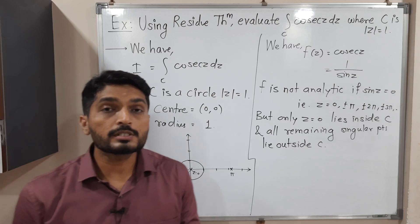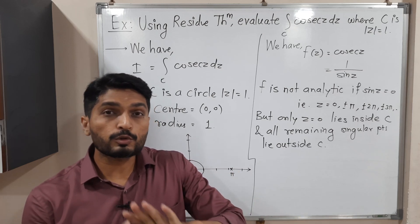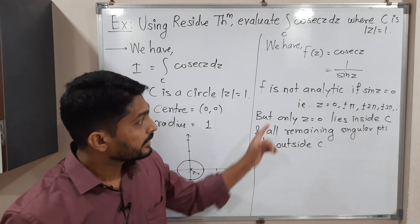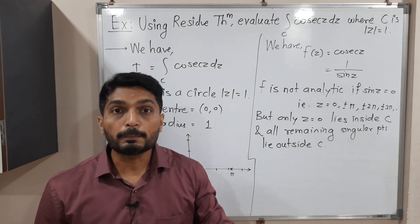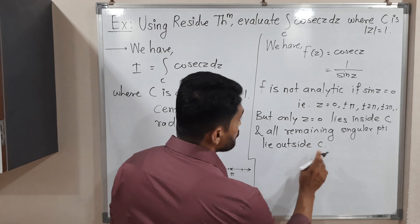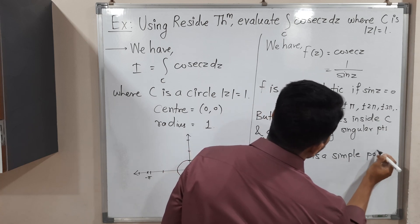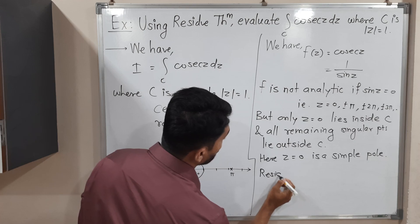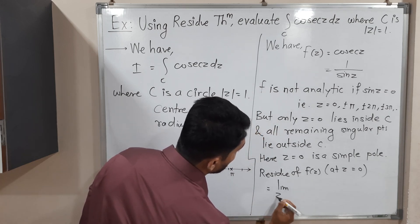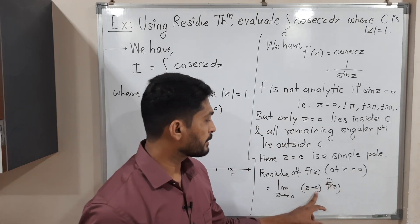We have to find the residue only at z = 0. The definition of residue involves Laurent series expansion, which is time consuming. Fortunately, all these are simple poles, so when we have simple poles there is a separate formula to calculate the residue. Since z = 0 is a simple pole, the formula for the residue of f(z) at z = 0 is: limit as z tends to 0 of (z − 0) · f(z).